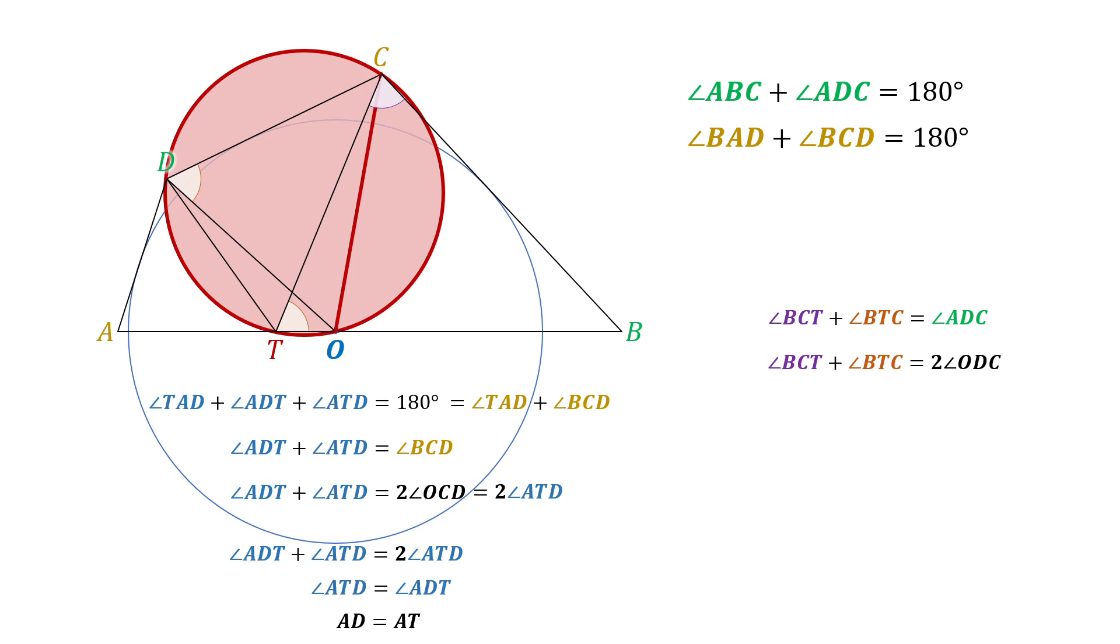Here, OC is the common arc, which leads us to conclude that angle ODC equals angle OTC. From this equation, we can prove that angle BTC equals angle BCT, making BC equal BT.